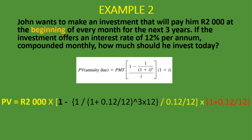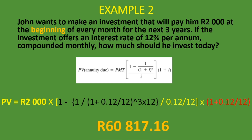Here is how it looks: Present value of an annuity due equals 2,000 rand times 1 minus the sum of 1 divided by (1 plus 0.12 divided by 12) to the power of 3 times 12, then divided by (0.12 divided by 12), multiplied by 2,000 rand, and finally multiplied by the additional period of (1 plus 0.12 divided by 12). The answer is 60,817 rand 16 cents. The answer with annuity due will always be higher than with the ordinary annuity.